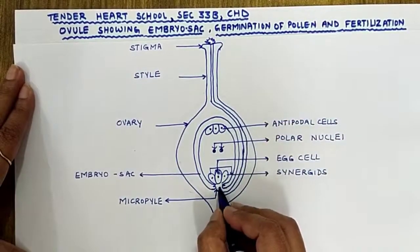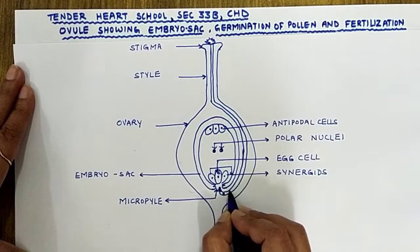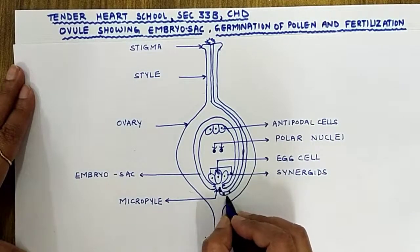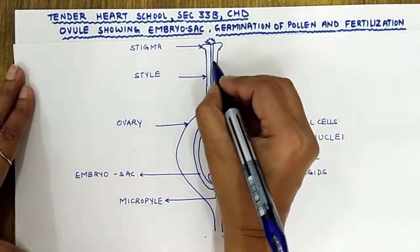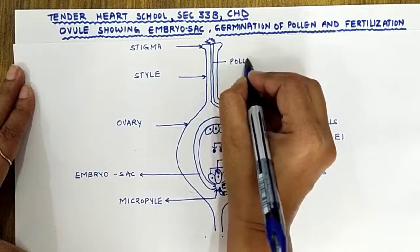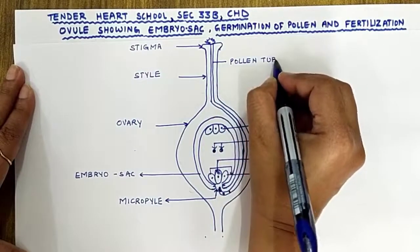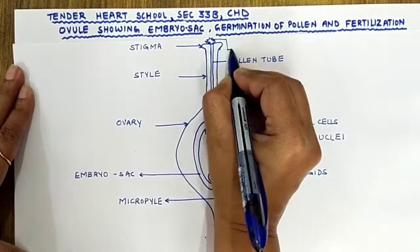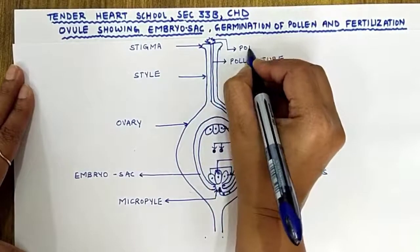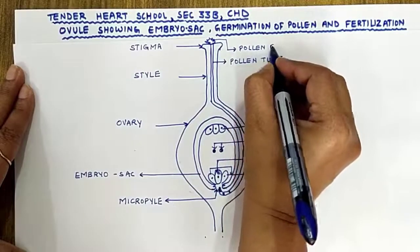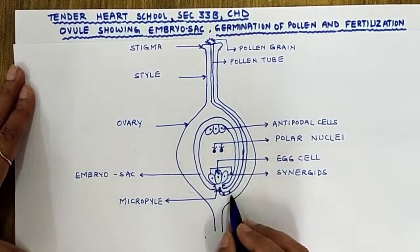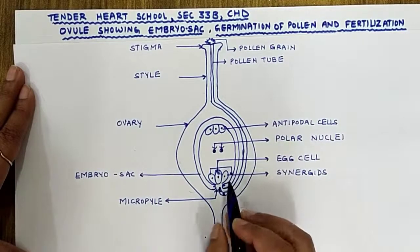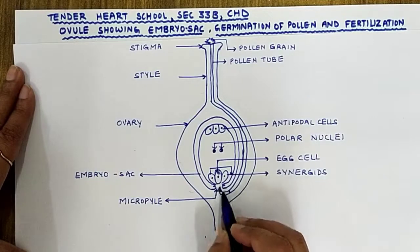Inside this pollen tube we have the male gamete. The tube nucleus and the generative nucleus are present inside this pollen tube. This is the pollen tube, and this one is the pollen grain. Inside the pollen tube we have the male gametes — the male reproductive cells — which are going to fuse with the egg cell and cause fertilization.